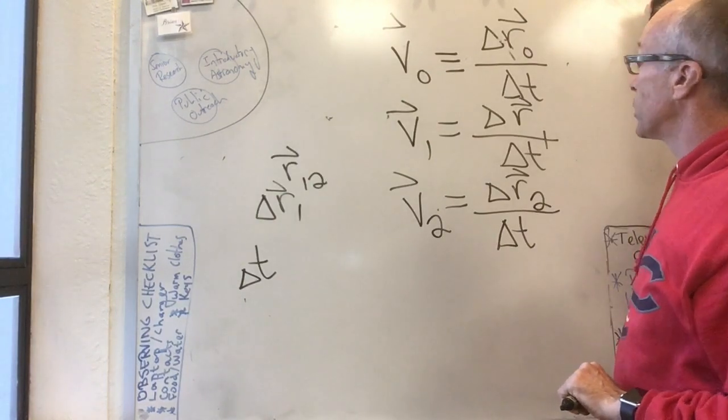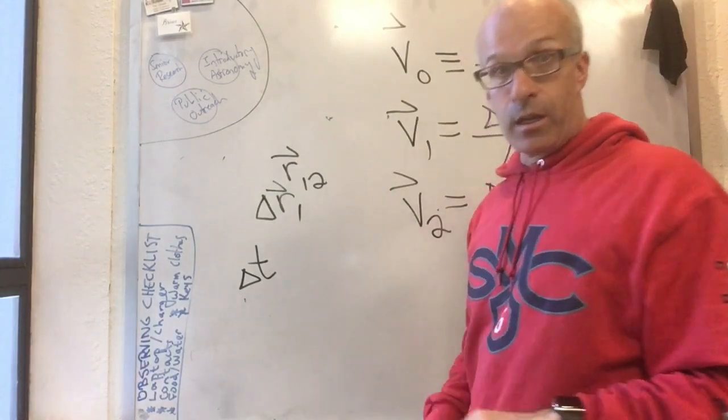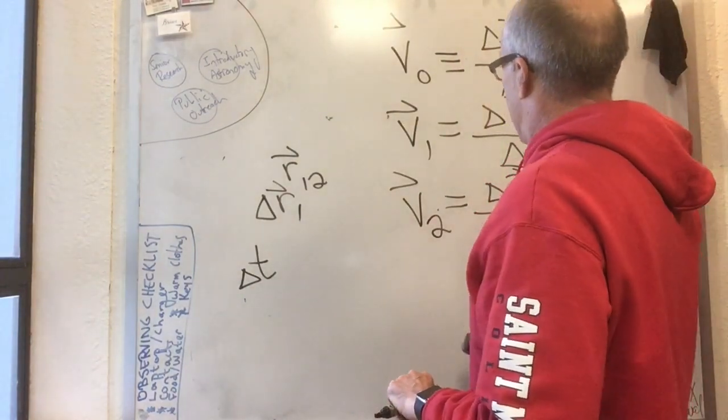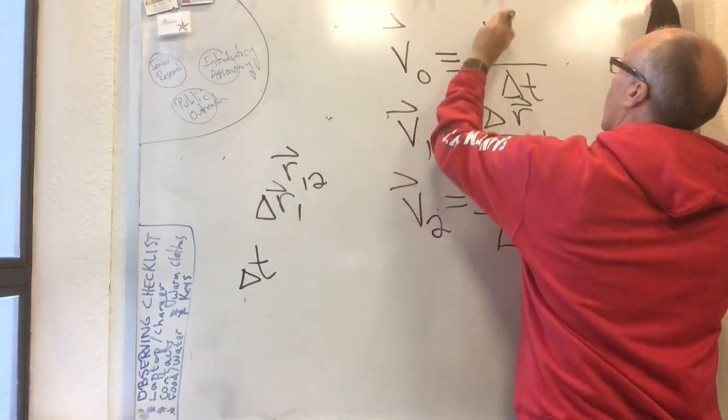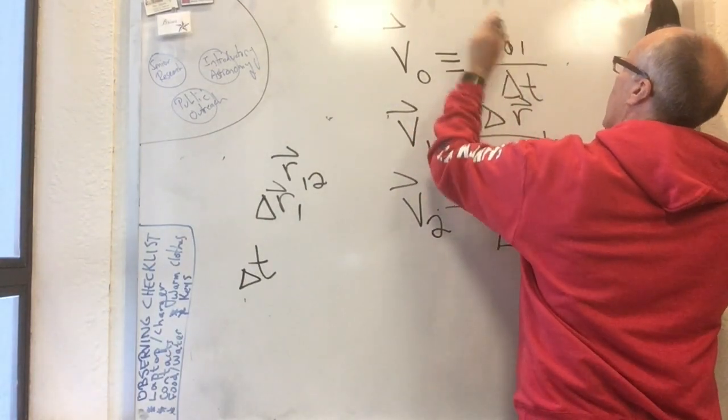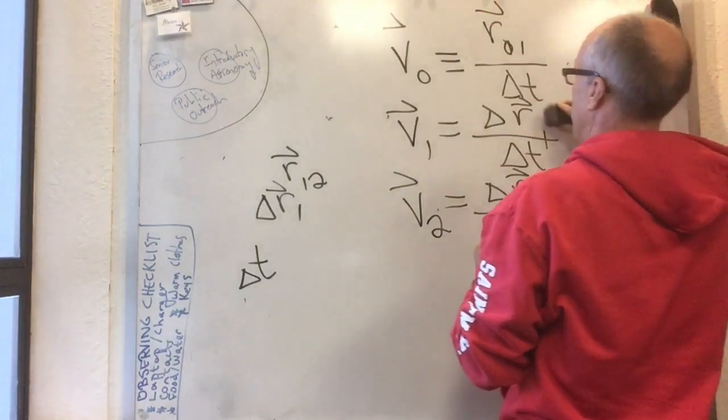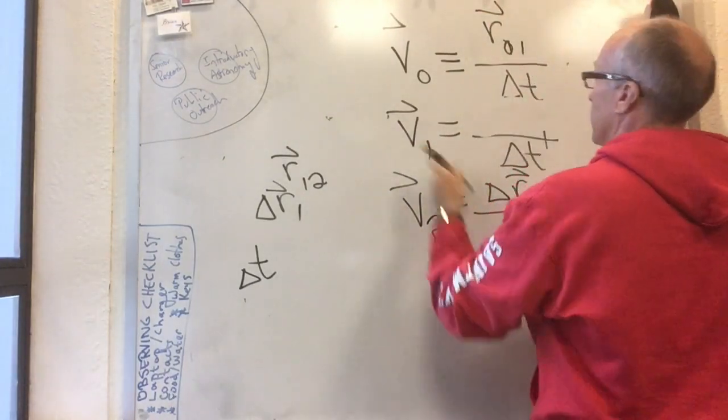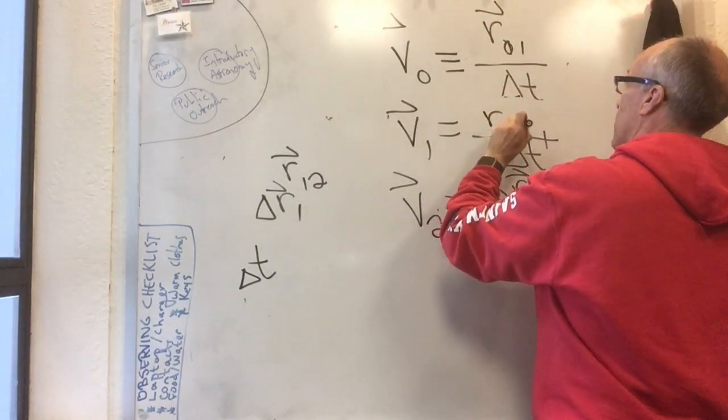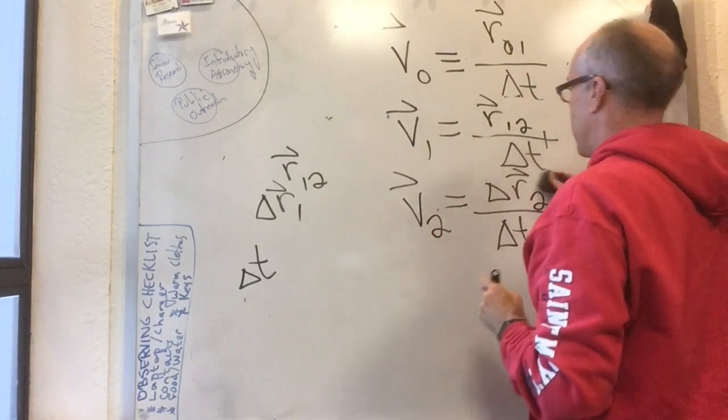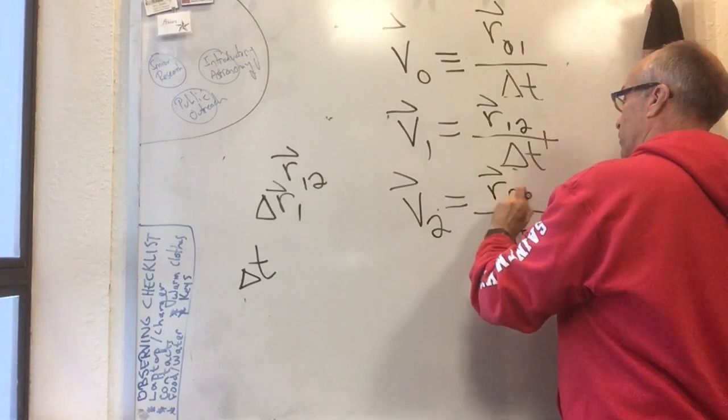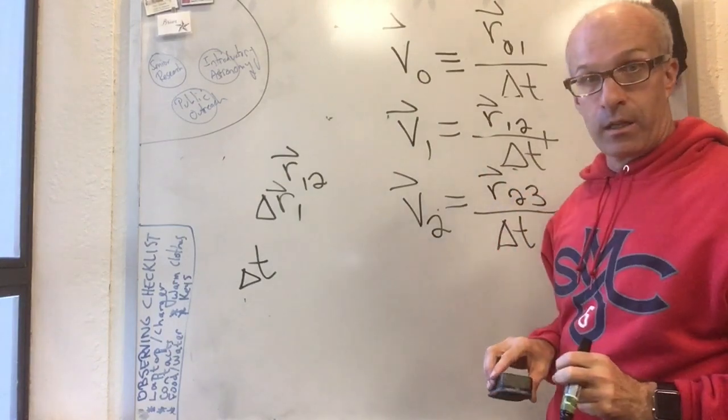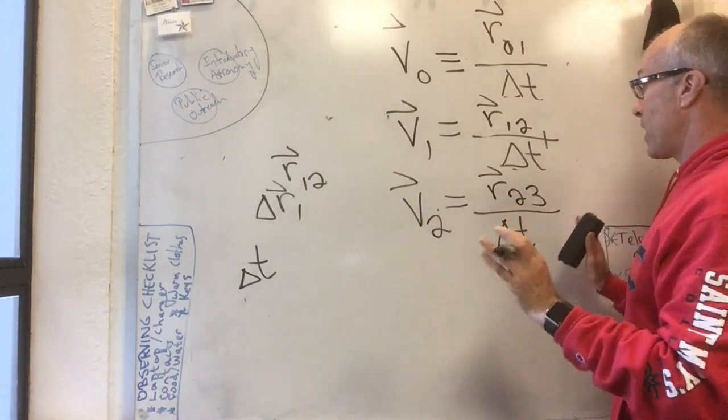Just so we have both notations going, I could also have written V naught is equal to r naught 1 over delta t, V1 is equal to r1,2 over delta t, and V2 is equal to r2,3 over delta t. That's just notation, no new concept.